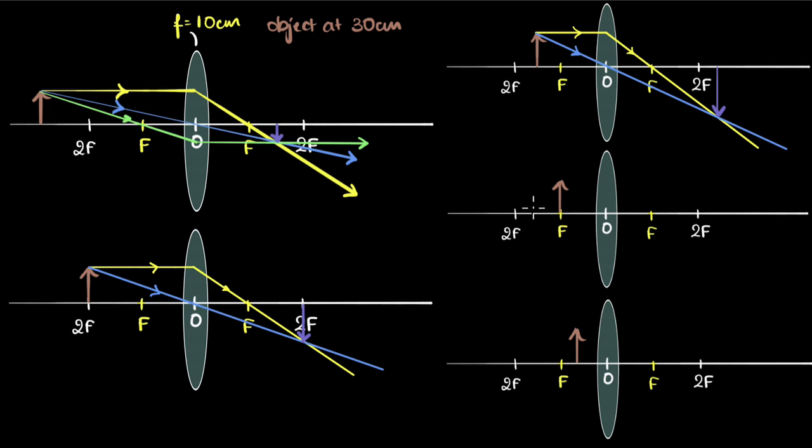Okay, what if I have the object at f. Again, same story. Two rays of light: parallel goes through the focus and the other one goes straight undeviated through the optic center. Notice these two rays are exactly parallel to each other, which means they're not going to meet ever. So you'll get no image in this particular case. When the object is at f you get no image at all.